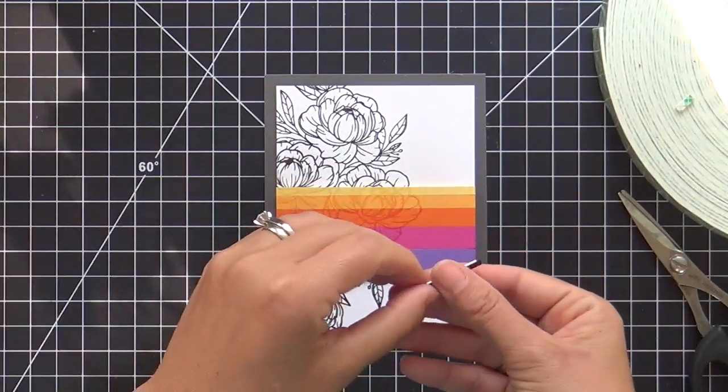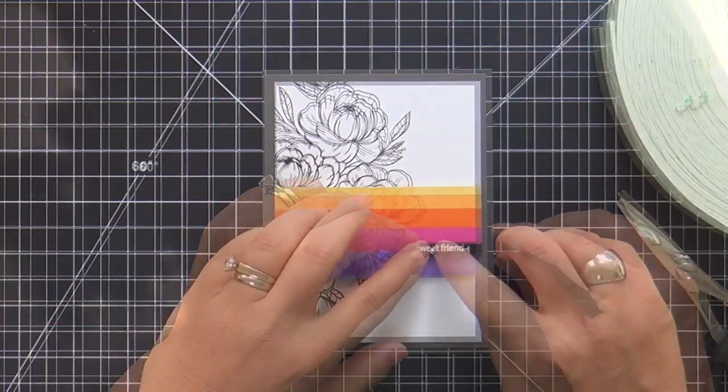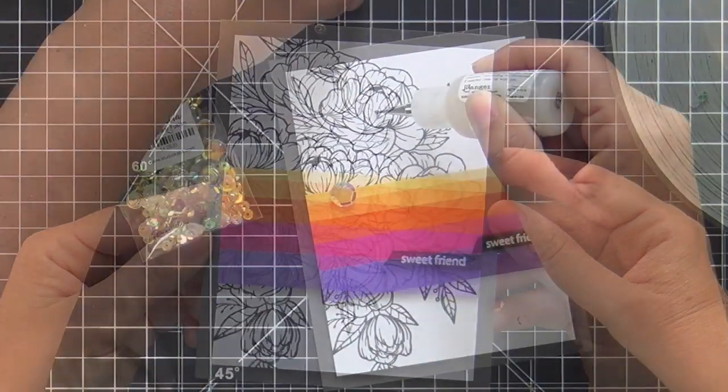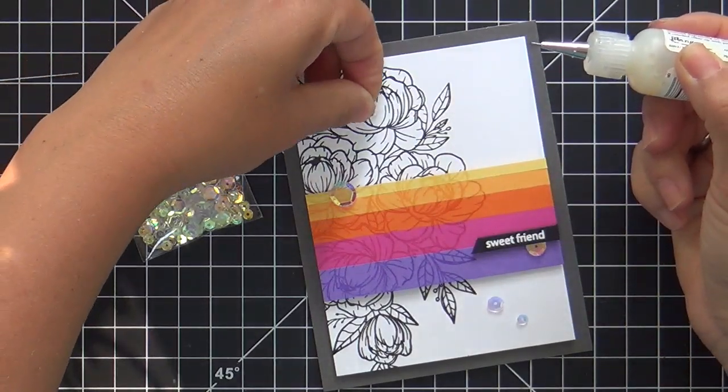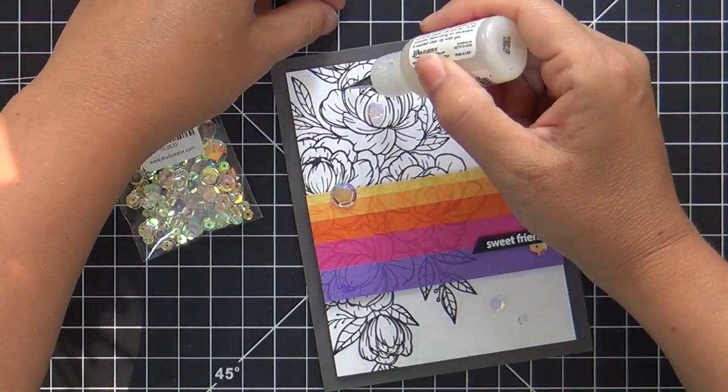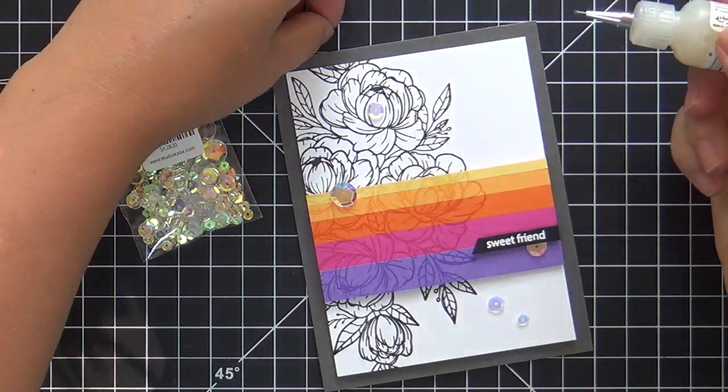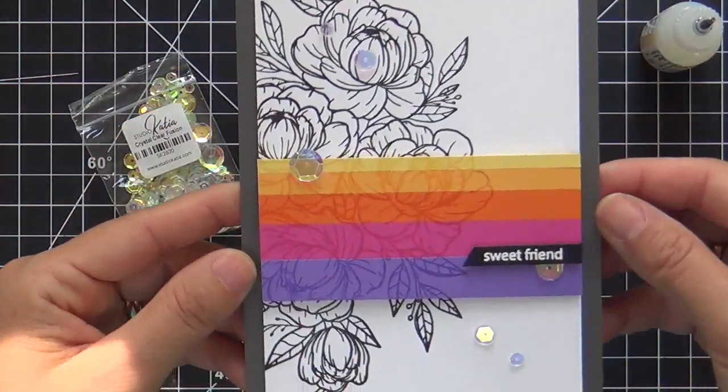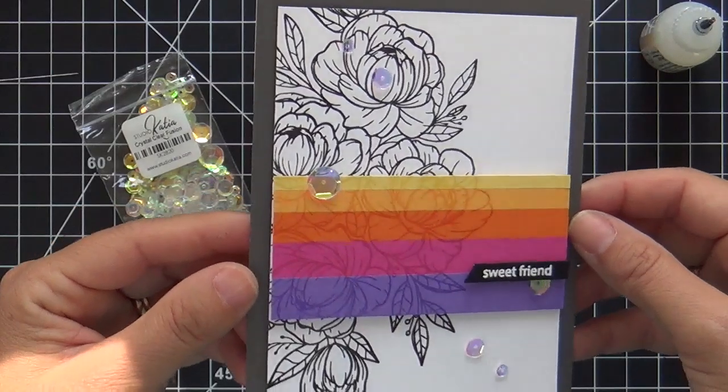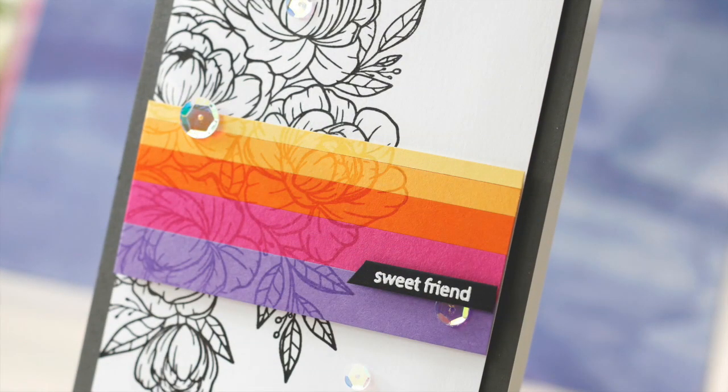So I'm putting this card together. Everything got popped up, popping up the sentiment. And then just to finish this off, I put a few sequins. These are Studio Katia, that clear, crystal clear fusion here and there. And this card's finished. It's kind of clean and graphic. Something a little different to spice up the floral image.